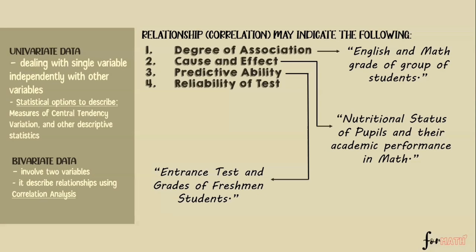Number four: reliability of test. Here we measure consistency — how reliable a test is. For example, teacher-made tests. In reliability testing, you give the same test twice or more to the same students at the same or different times. If the student gets the same score or close to it consistently, the test is considered reliable.